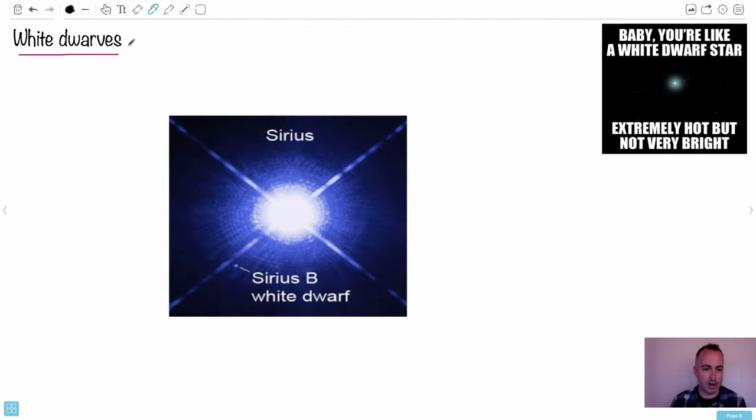And going more detail to the white dwarves, for example, there's a really, really bright star called Sirius A, but right next to it, because it's a binary system. Binary means two stars together. There's Sirius B. It's its little partner, and they actually orbit each other. And it's a white dwarf. So I guess it's a bit sexist, but although it could be for a guy or girl, I guess. Baby, you're like a white dwarf star. You're extremely hot, but not very bright.